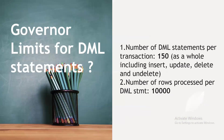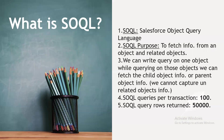What are the governor limits for DML statements? The number of DML statements per transaction is 150, including insert, update, delete, and undelete. The number of rows processed by DML statements per transaction is 10,000.